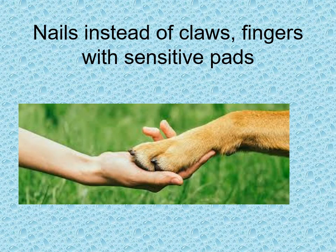On the right is a dog paw. Dogs do not have nails — they have claws. On the left is a human. We have nails and we have fingers with sensitive pads. We are able to touch things and get information just by our sense of touch.